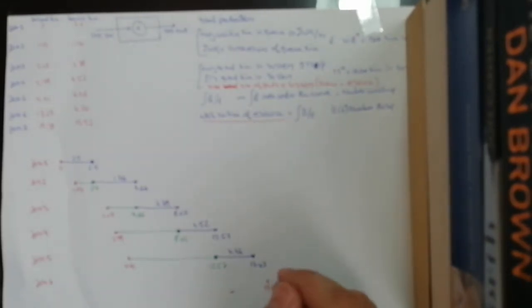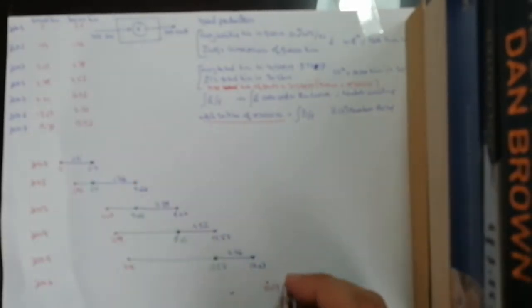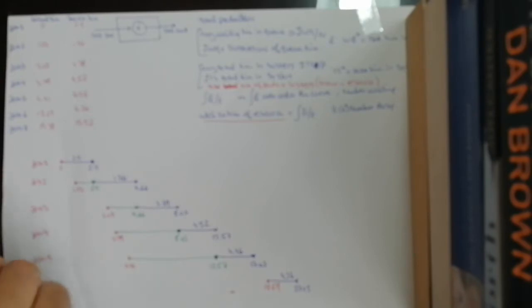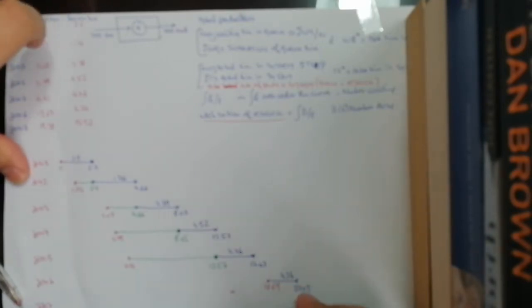Job 6 arrives at 18.69, after the system has been idle, and stays in the system for 4.36, leaving at 23.05. Job 7 arrives at 19.39 and would stay for 15.52, finishing at 34.91. However, the system stops at time 20, so only five jobs complete.